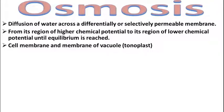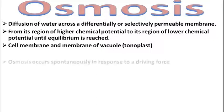Cell membrane and membrane of vacuoles — tonoplast. यह ज़्यादातर जो cell membrane होती है, और जो tonoplast vacuoles होता है, जो कि centrally placed होता है, plants में काफी बड़ा vacuoles पाया जाता है, तो उसकी membrane में भी काफी osmosis देखने को मिलती है।